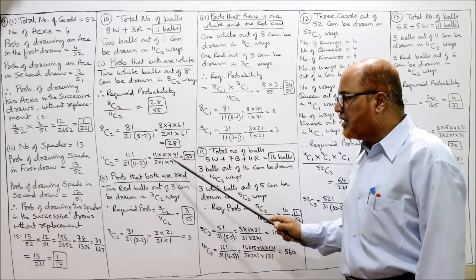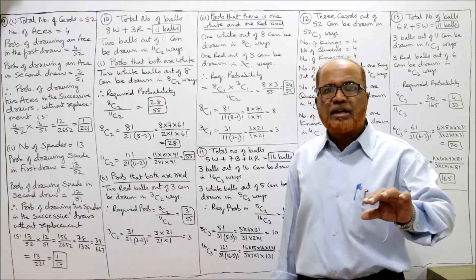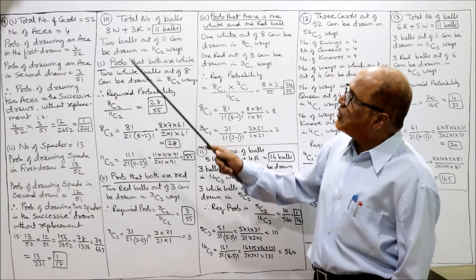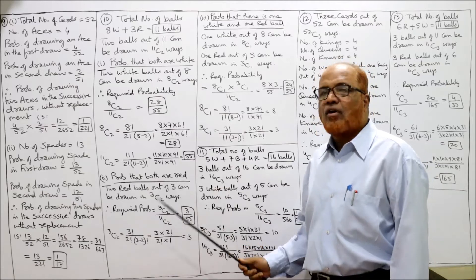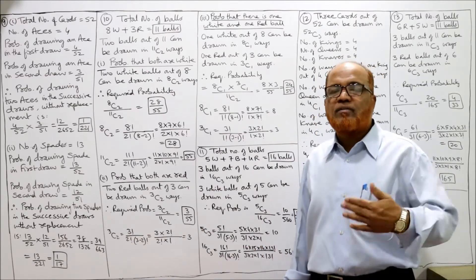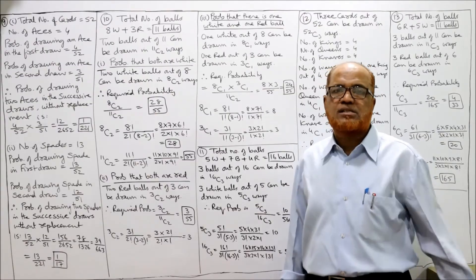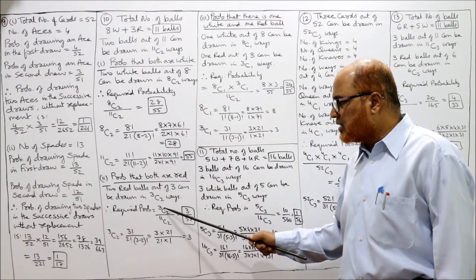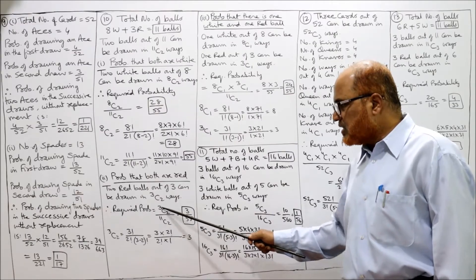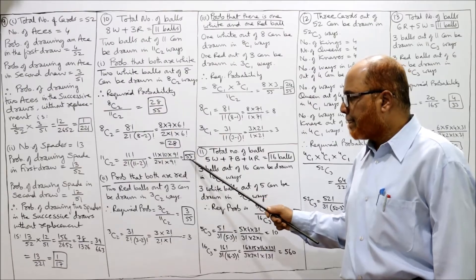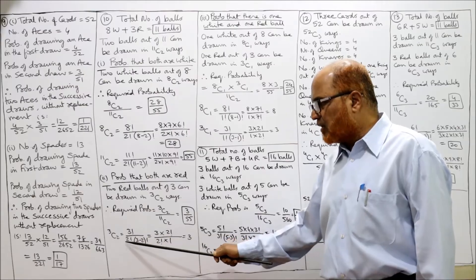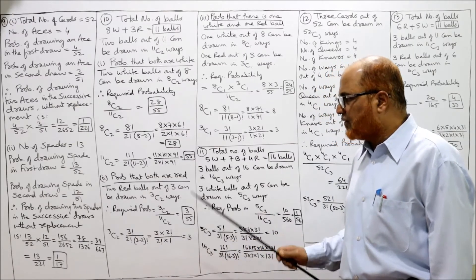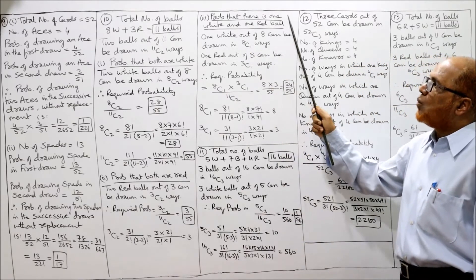Second question — probability that both balls are red. The denominator remains 11C2 = 55. We want 2 red balls out of 3, so the numerator changes to 3C2. 3C2 = 3! / (2! × 1!) = 3. So probability that both balls are red = 3/55.